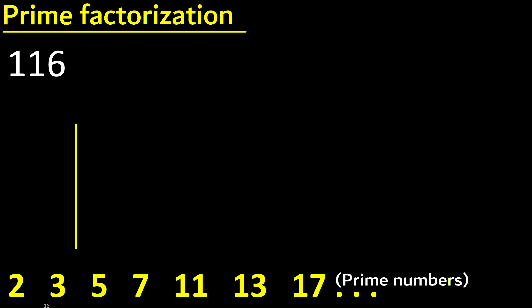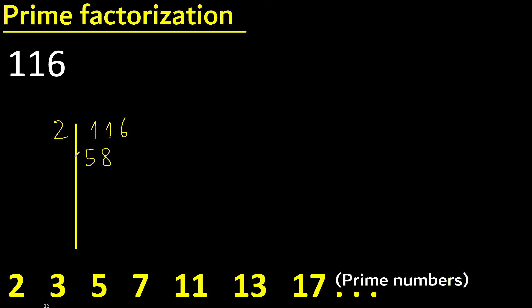Prime factorization. 116 can be divided by 2 because the last digit is even. Divided by 2 is 58. Divided by 2 is 29. 29 is a prime number.